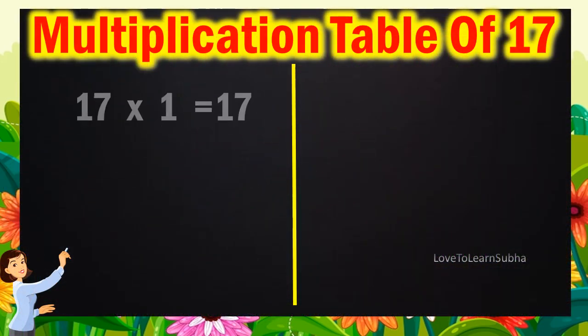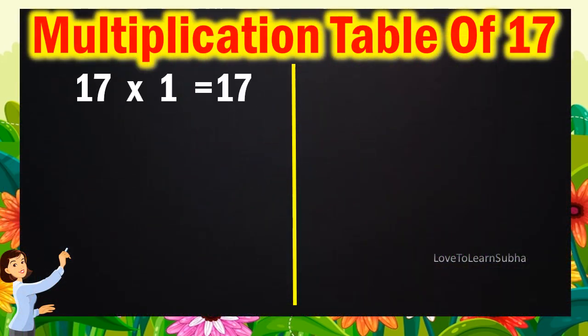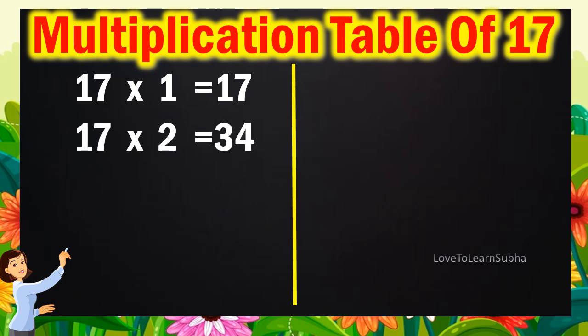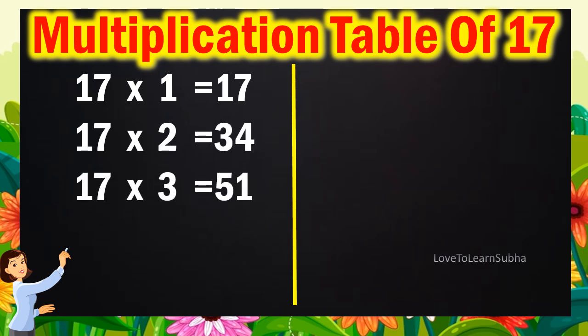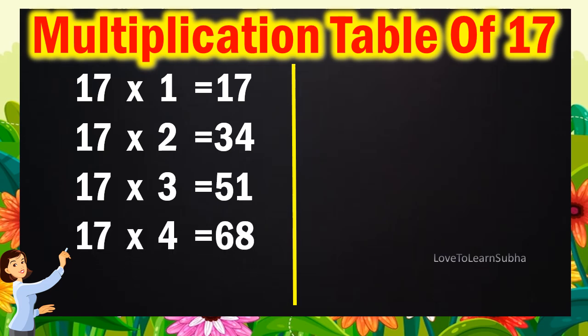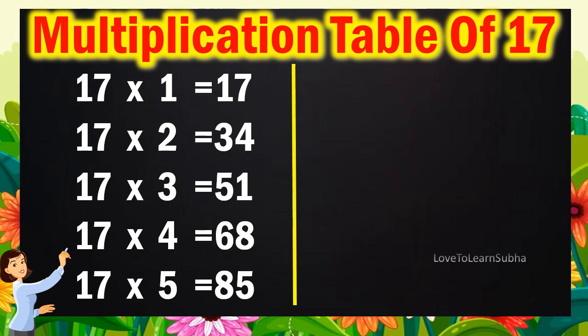17 ones are 17, 17 twos are 34, 17 threes are 51, 17 fours are 68, 17 fives are 85,